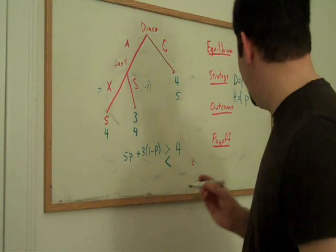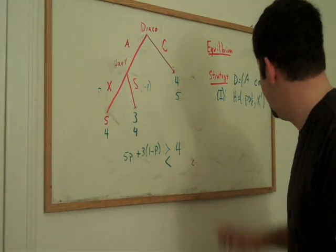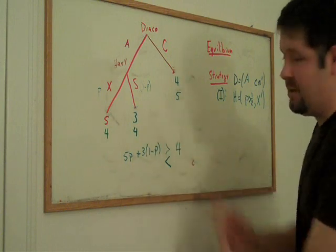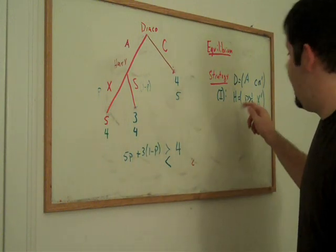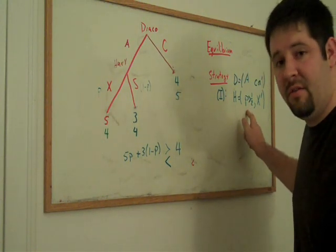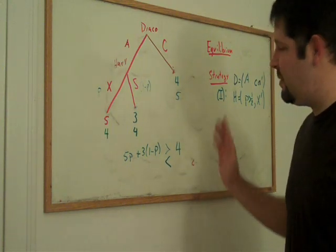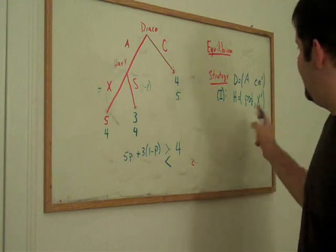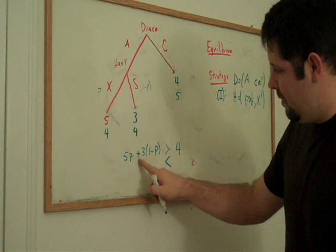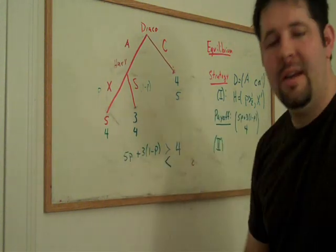So let's consider the two cases. If P is bigger than 1 half, this strategy pair says that Draco's best response is to play A, little c and little a from before, which got us these payoffs in the first place. And Harry's best response to that, or one of Harry's best responses because he's indifferent of the value of P, is to pick P bigger than 1 half and pick X prime on the right hand side of the tree. This will realize payoffs of 5P plus 3(1 minus P) for Draco and 4 for Harry.